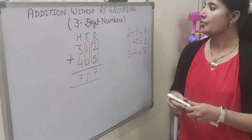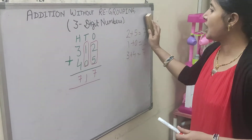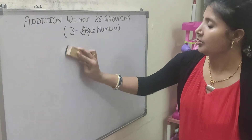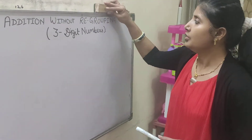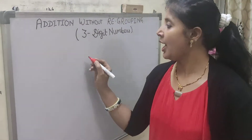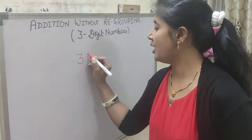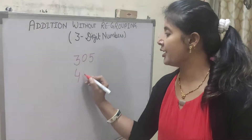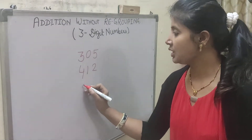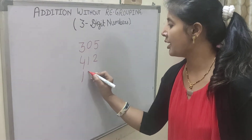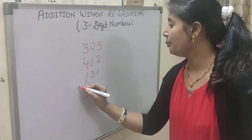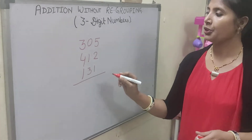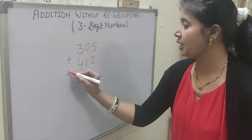Now let us take one more example. Suppose I have 305 oranges, 412 apples, and 131 bananas. Now we have to find out the total number of fruits. So we have to add these numbers.